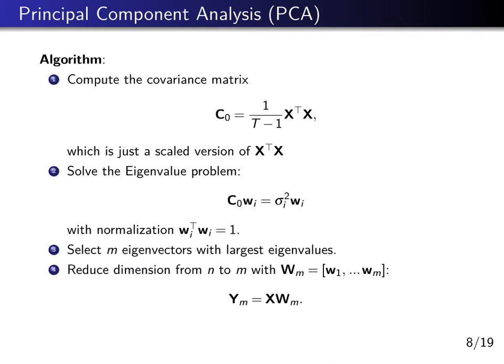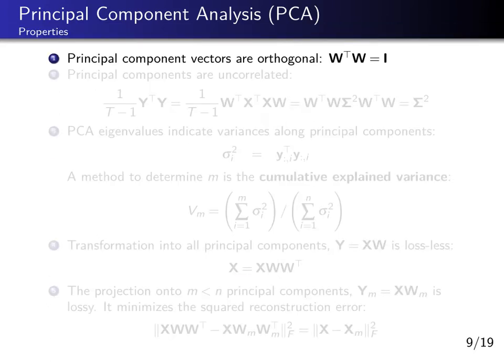PCA has a number of other interesting properties. First, principal component vectors are orthogonal. This is simply a result of the eigenvalue decomposition. W is an eigenvector matrix, and W transpose W — computing all scalar products between all pairs of eigenvectors — gives us an identity matrix. So all pairs of different eigenvectors are orthogonal to each other.